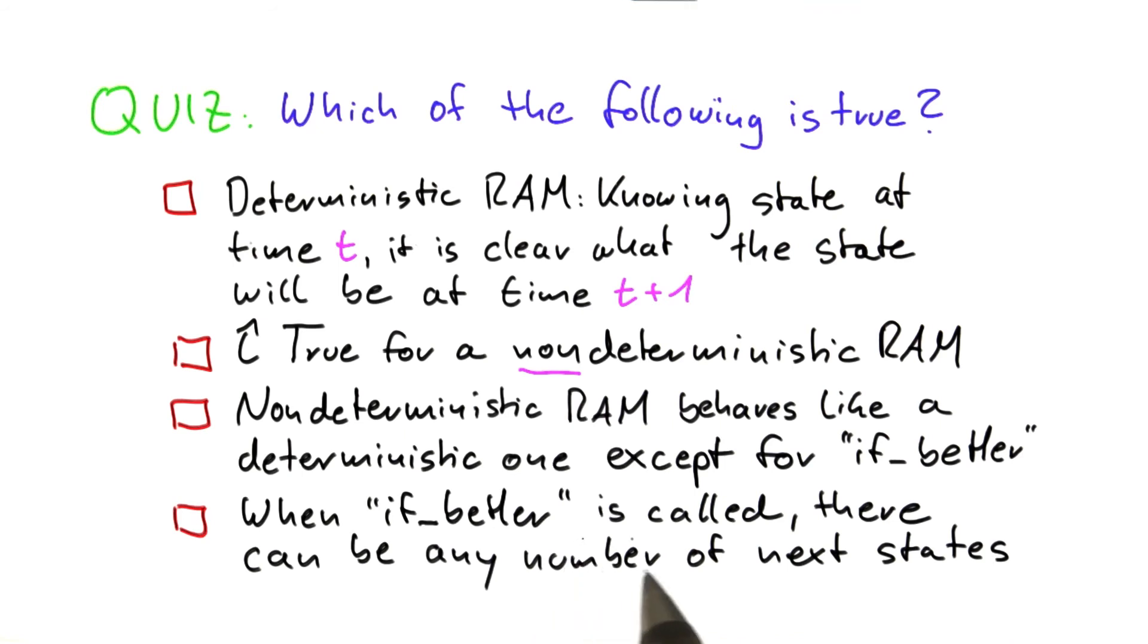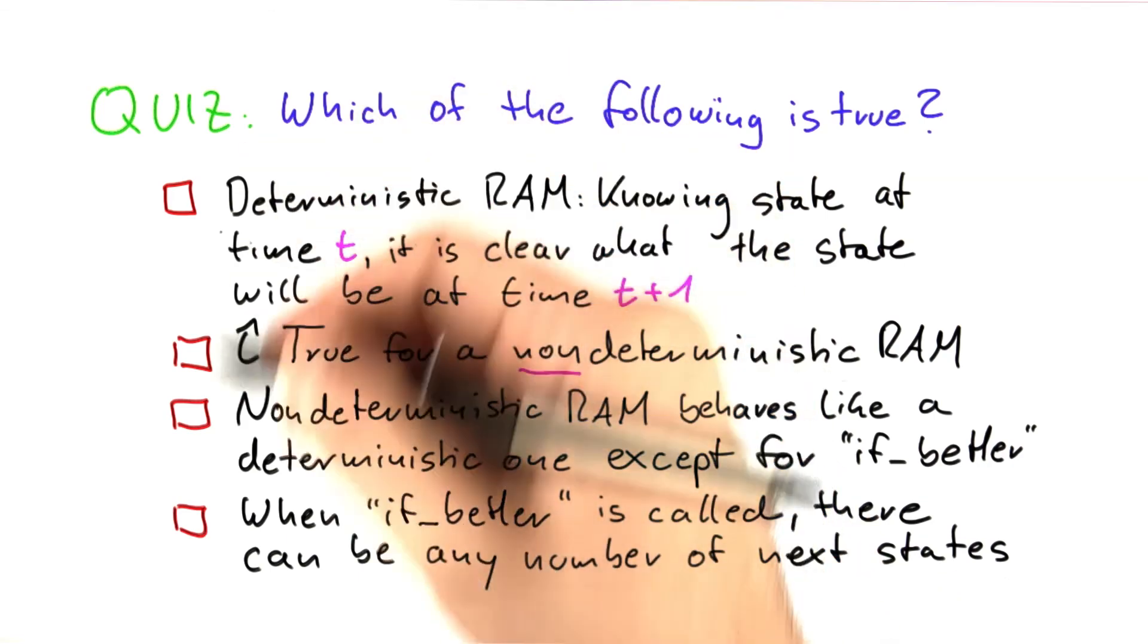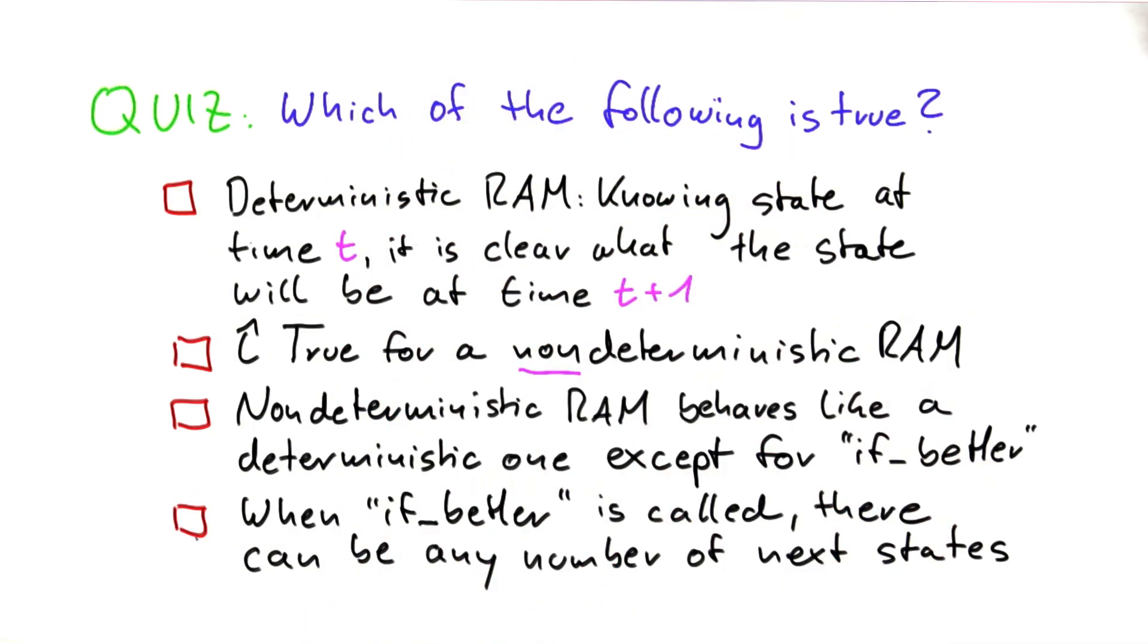And finally, if we use the if better function, there can be any number of next states. So not 1, not 2, not 3, but basically an arbitrarily large number of states, and we cannot make any statement about that. So which of the following is true? Please check all the boxes where the statements are true.